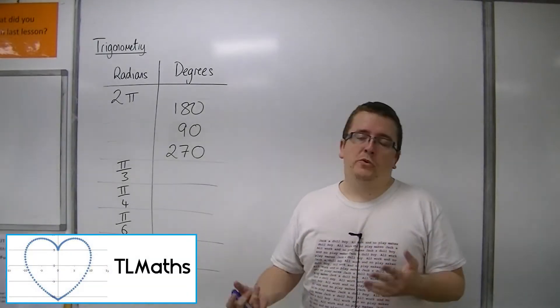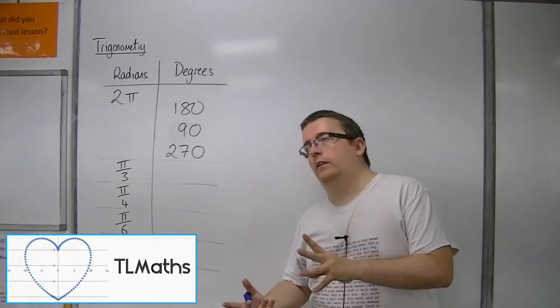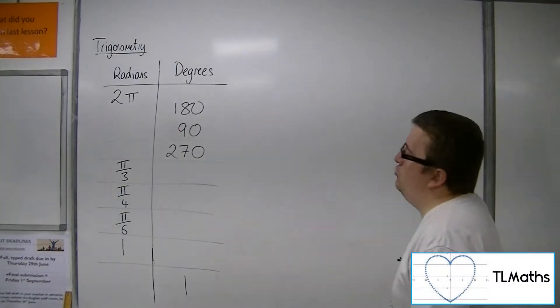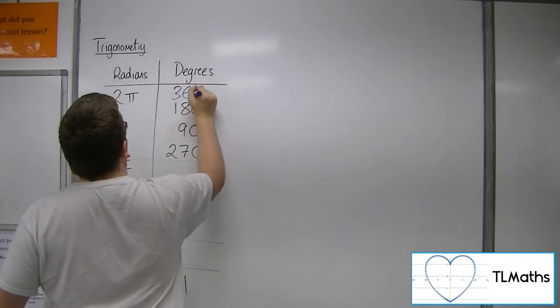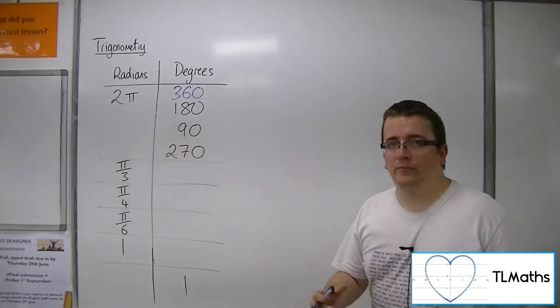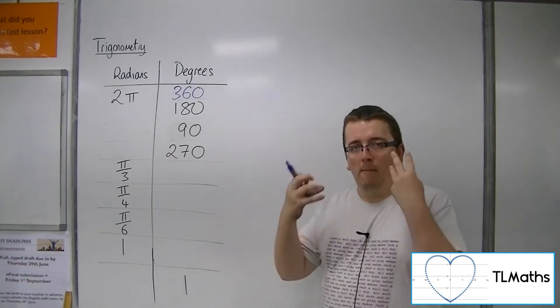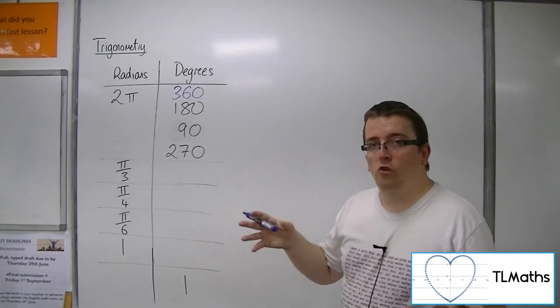So we need to be able to convert between degrees and radians. We need to remember that 2 pi radians is 360 degrees. That's really the key. Remember that one and you can work out all the rest.